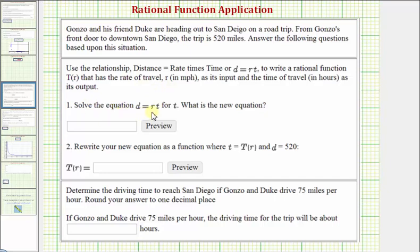Number one, we're asked to solve the equation d equals r times t for t. So if we want to solve d equals r times t for t, we need to divide both sides by r. Notice when we do this, we get d divided by r equals t, or if we want, t equals d divided by r. So the new equation is t equals d divided by r.